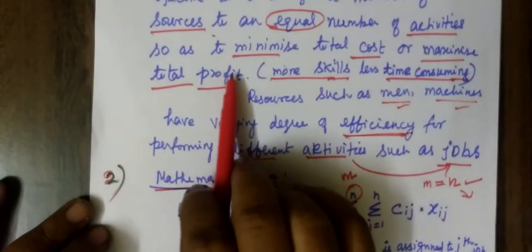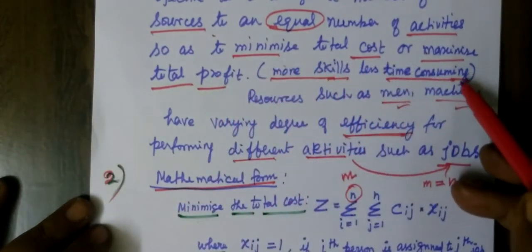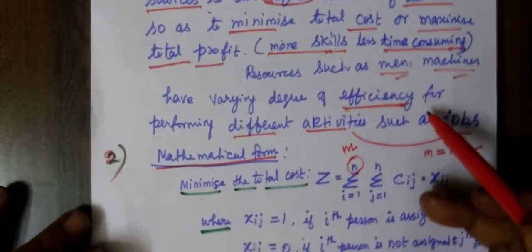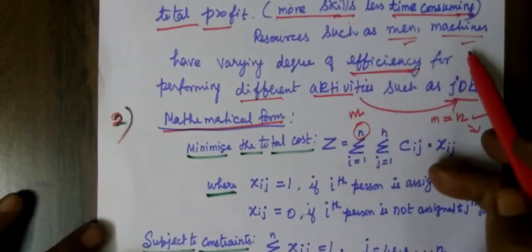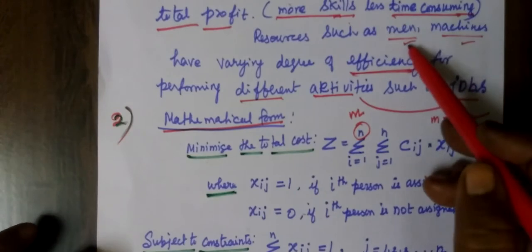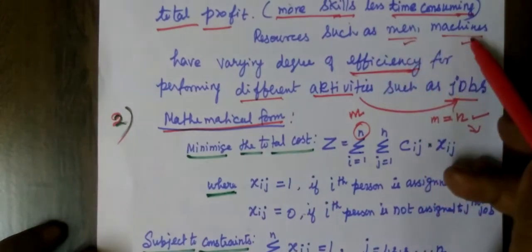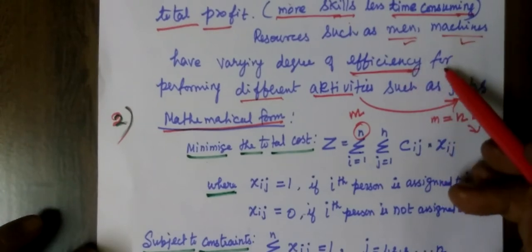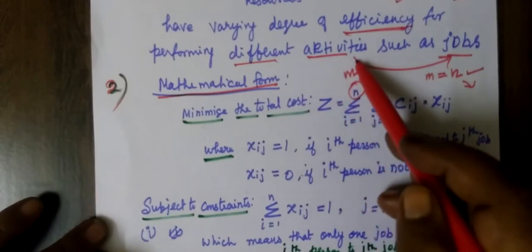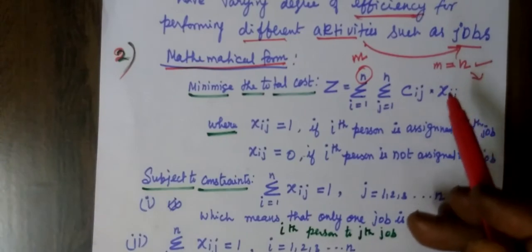In assignment problem, we are minimizing the total cost or maximizing the total profit. The basic idea is more skills and less time consuming. Resources such as men and machines have varying degrees of efficiency — your efficiency may vary. We are giving the activities, and here the activities refer to jobs.